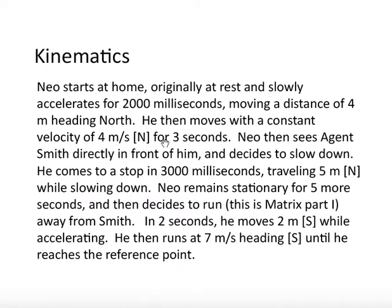And finally, let's look at plotting this graph. Neo starts at home. Originally at rest and slowly accelerates for 2,000 milliseconds, moving a distance of 4 meters heading north. He then moves with a constant velocity of 4 meters per second north, for 3 seconds. Neo then sees Agent Smith directly in front of him and decides to slow down. He comes to a stop in 3,000 milliseconds, traveling 5 meters north while slowing down. Neo remains stationary for 5 more seconds and then decides to run away from Smith. In 2 seconds, he heads 2 meters south while accelerating. He then runs at 7 meters per second heading south until he reaches the reference point. So, a lot of information here. How do we plot this? Well, you take it one step at a time.